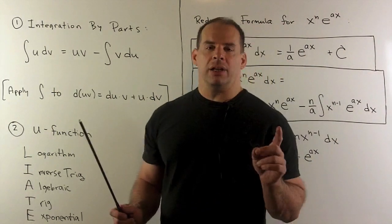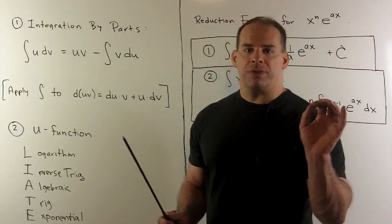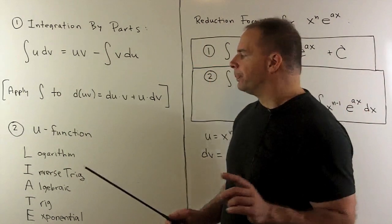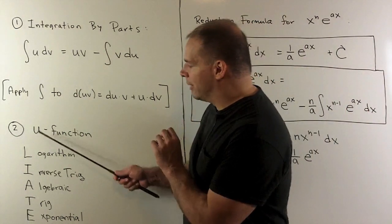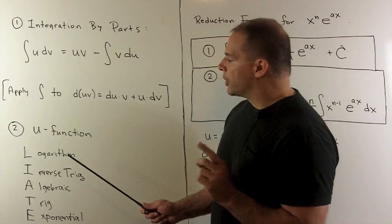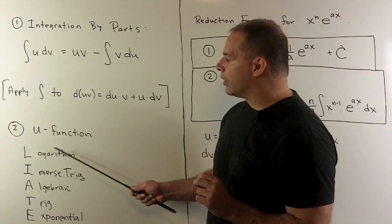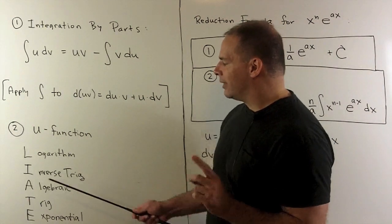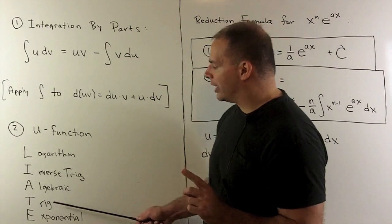Now, the next thing we need is how do we figure out which function we should use for u. And that's just given by this mnemonic here, LIATE. So, your first choice for your u function is logarithm, then inverse trig, then algebraic, then trig, then exponential.